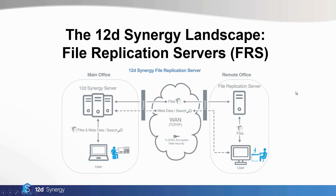So with a file replication server, you put a file replication server at each of your remote offices, and when you request a file, the users get the files from there instead. Overnight or at various scheduled intervals, the synchronisation occurs to transfer files between your 12D Synergy server and all your remote file replication servers. You can set up all sorts of rules about how and when this occurs and for different types of files — for example, only transfer ECWs overnight, but maybe transfer 12D model project changes every hour. This makes sure that your users can quickly access the data they need and allows that transfer to happen in the background rather than having to sit around and wait.